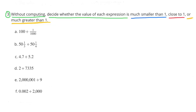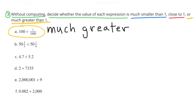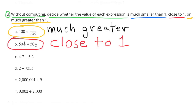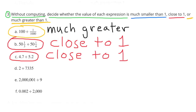Number 3: without computing, decide whether the value of each expression is much smaller than 1, close to 1, or much greater than 1. A: much greater, because the value of the dividend is much greater than the value of the divisor. B: close to 1, because the dividend and the divisor are fairly close in value.